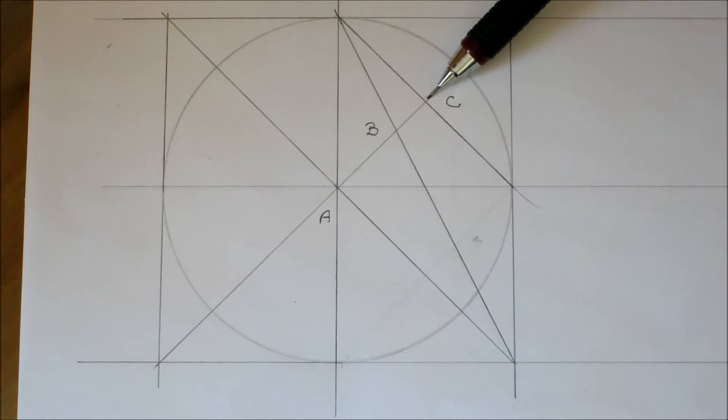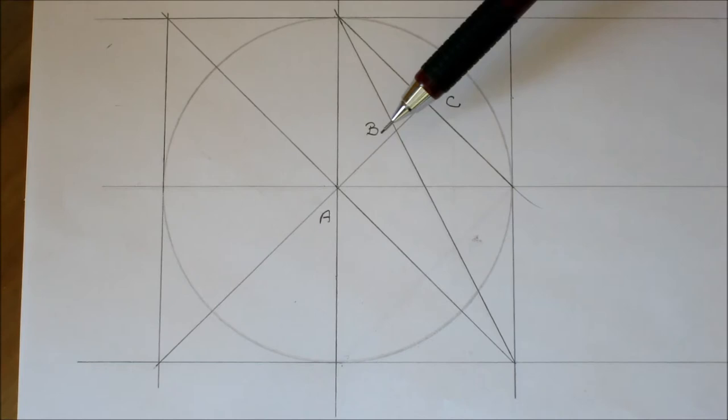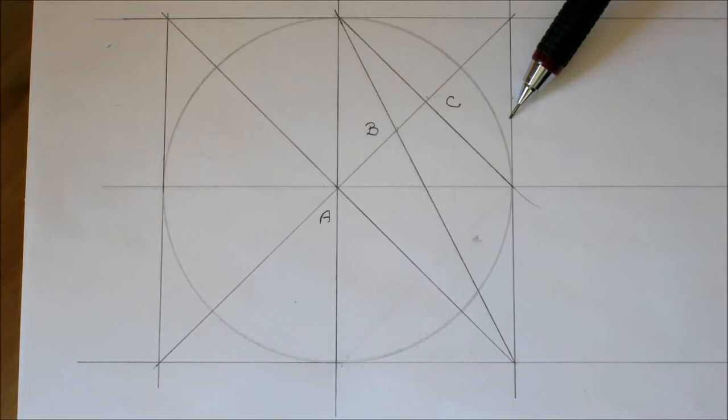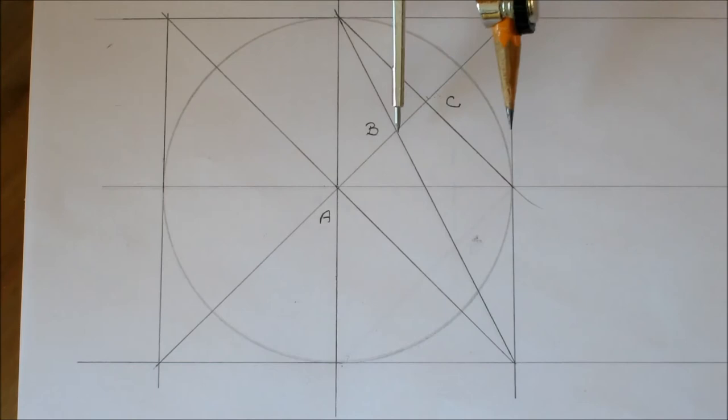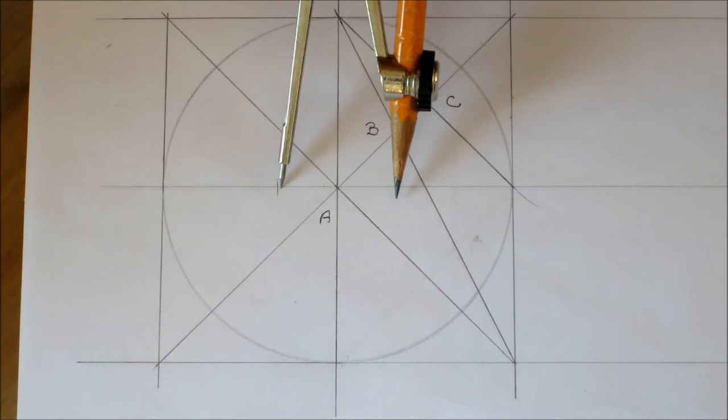So what we have here is at C, this distance would be one quarter, so you can do your square and a quarter. And at B, this distance to this edge is a square and a third. Indeed, if we check that out, that is a square and a third.